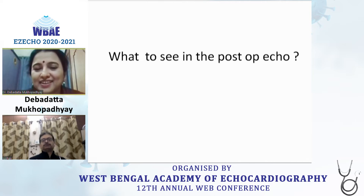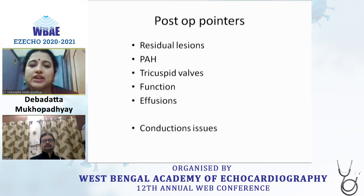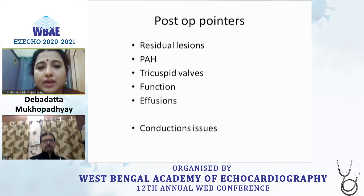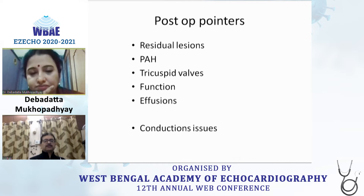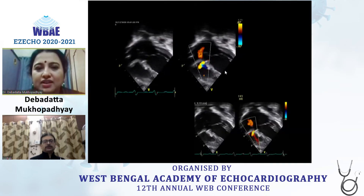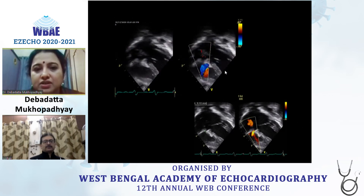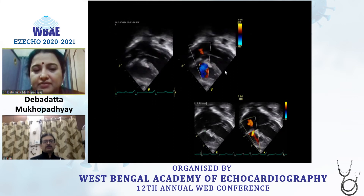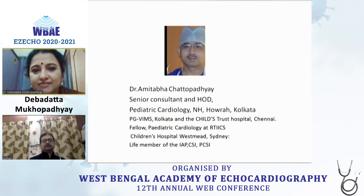In the post-operative period, we look for residual lesions. We examine the tricuspid valve because sometimes we need to take down the tricuspid valve at the insertion or origin to close the VSDs completely. We look at tricuspid valve function, ventricular function, and if there are any effusions. This is a tiny residual VSD after a large VSD closure — tiny residuals can be followed up with pulmonary pressure assessment or addressed later by catheter.